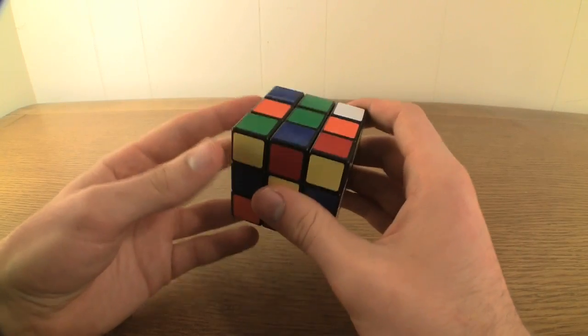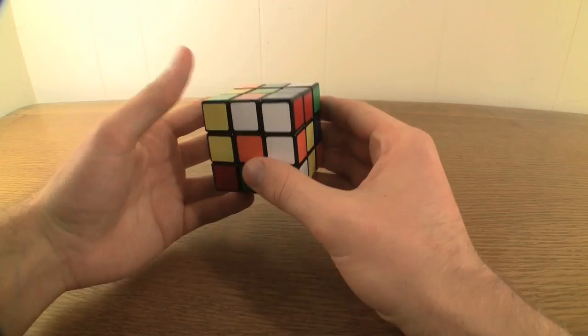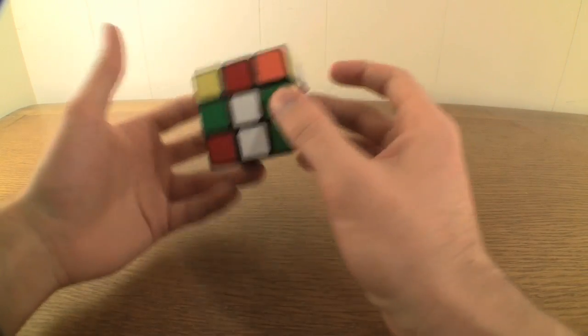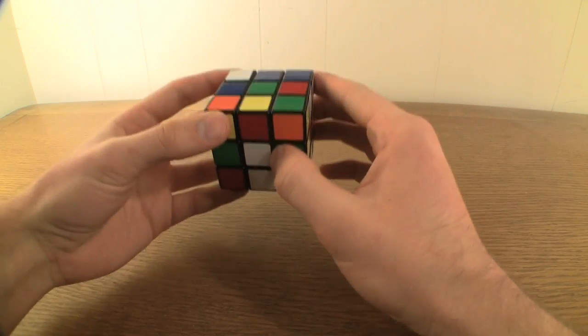The first thing we're going to want to solve is the green cross. Find any edge piece with green in it, and being careful to ensure that the green center remains in the up face,